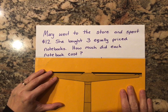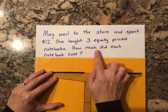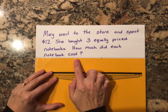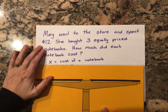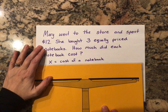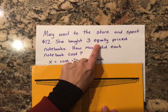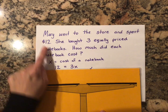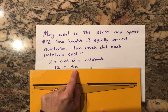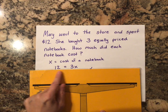Let's try another problem. Mary went to the store and spent $12. She bought three equally priced notebooks. How much did each notebook cost? Step one: decide what X represents. Since I don't know the cost of a notebook, each X will represent the cost of one notebook. Step two: set up the equation. She spent a total of $12, equal to what she paid for three equally priced notebooks, so my equation is 12 = 3X.